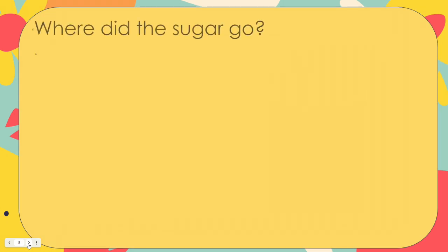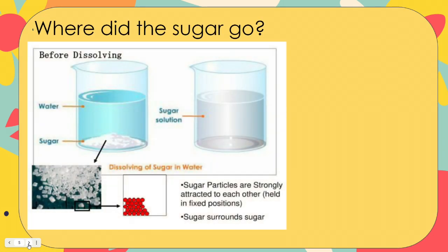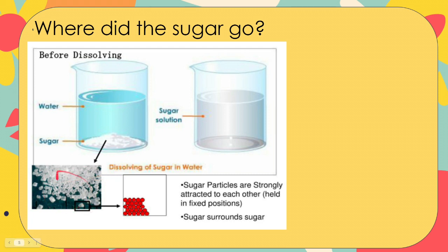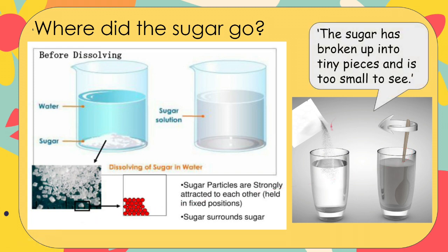Where did the sugar go? This is the sugar and water before dissolving. The sugar cannot be seen but it is still in the cup. But how could you check the sugar is still there? When a solid dissolves in a liquid, it is still there even though it cannot be seen. The sugar has broken up into tiny pieces and is too small to see. Dissolved solids remain in the liquid and do not disappear.